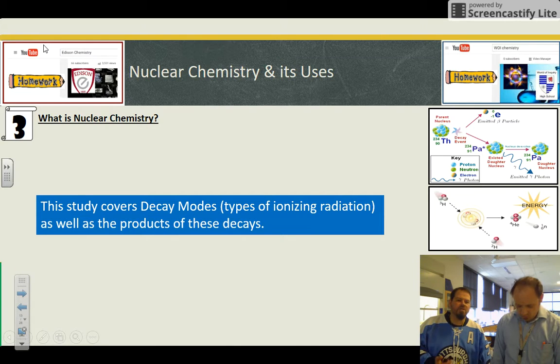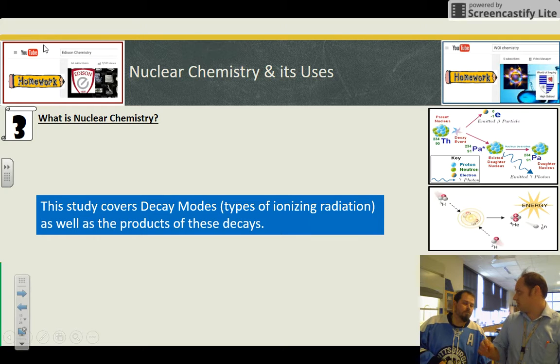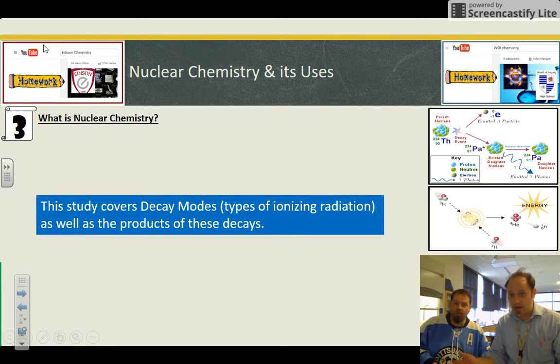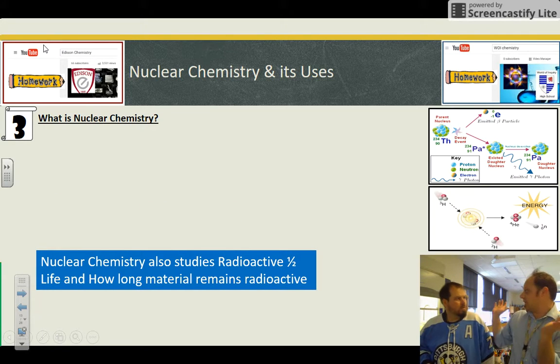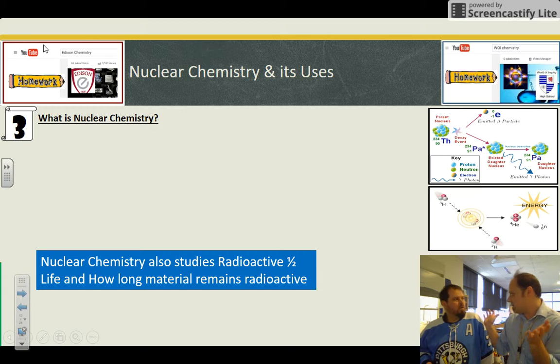Decay modes. You need to know the different kinds of decay. Types of ionizing radiation. Because there's electromagnetic radiation, magnetic waves, electricity, light. Those are all types of radiation. X-rays, ultraviolet waves, FM radio waves. X-rays are the only ones that are technically ionizing radiation.